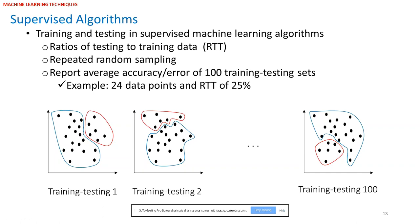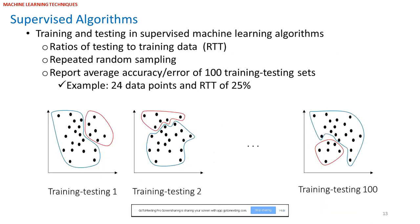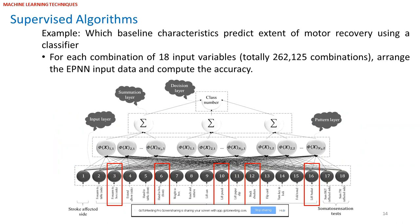Here is an example of our previous work. What you see in the image is the architecture of an enhanced probabilistic neural network — a supervised classifier. I want you to pay attention only to the input layer and the output layer. In this problem we have 18 actual metrics — it's an 18-dimensional problem. There are 18 variables in the input layer and one output, which is a class number. We want to see which baseline characteristics predict extent of motor recovery using the classifier in chronic stroke.